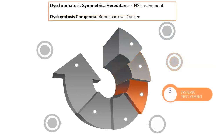The third thing is systemic involvement — very crucial, very important — because some of these disorders have got involvement of other organs. For example, episcomatosis and asymmetric pigmentation has got CNS involvement and even eye involvement, and dyskeratosis congenita has got bone marrow involvement and even cancer. So this is important to know; some of these disorders may have systemic manifestations.